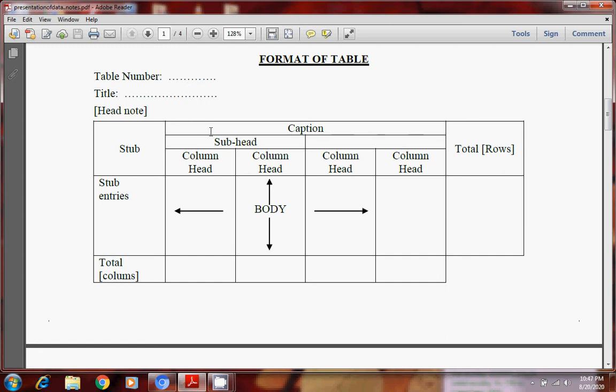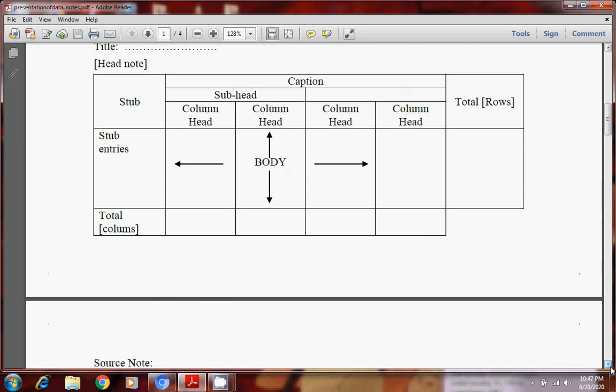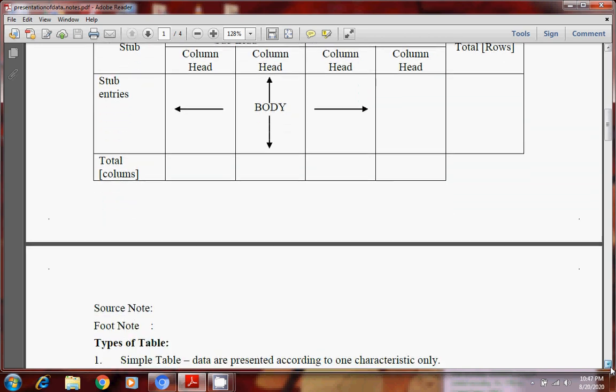Then stub. Stub is row heading. Then these are subheadings. Caption is column heading. This is column. These are columns. These four are columns. And these two, three are rows. One is stub. Second, stub entry. Then column. So this is and this is called body of the table. So this is the format of the table. How this table is made. This is called format of table.